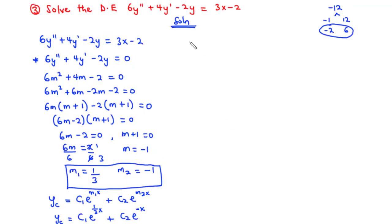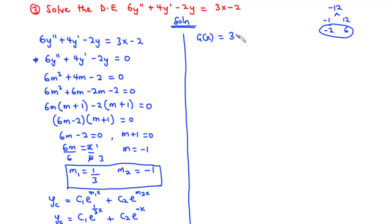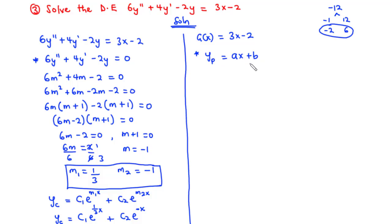Now let's find the particular integral. The non-homogeneous term g(x) = 3x − 2 is a polynomial of degree 1, a linear function. Therefore, we deploy yp = ax + b, the general form of a degree-1 polynomial.